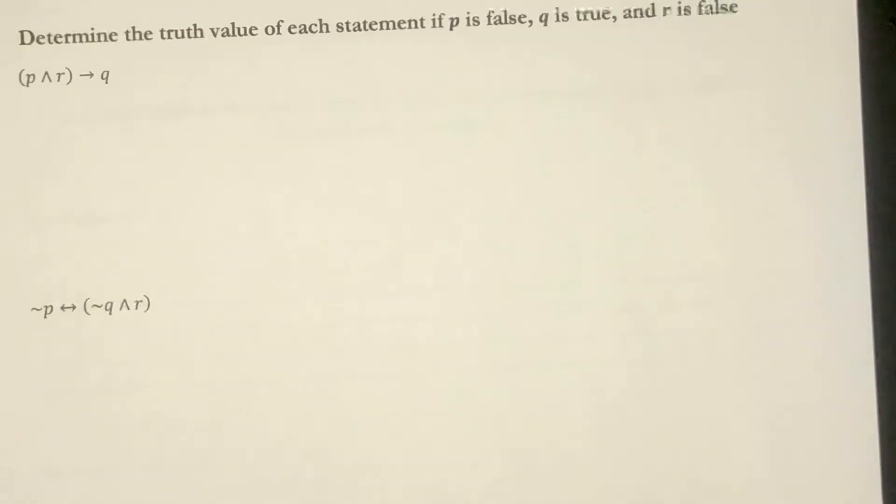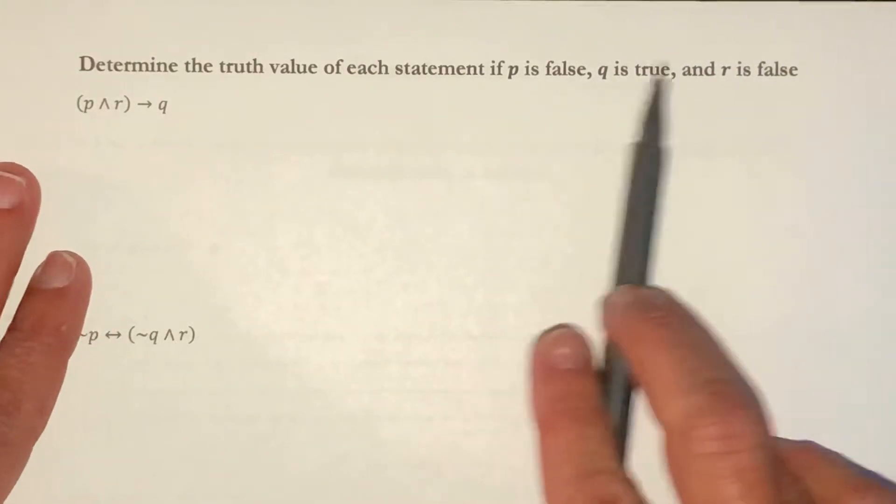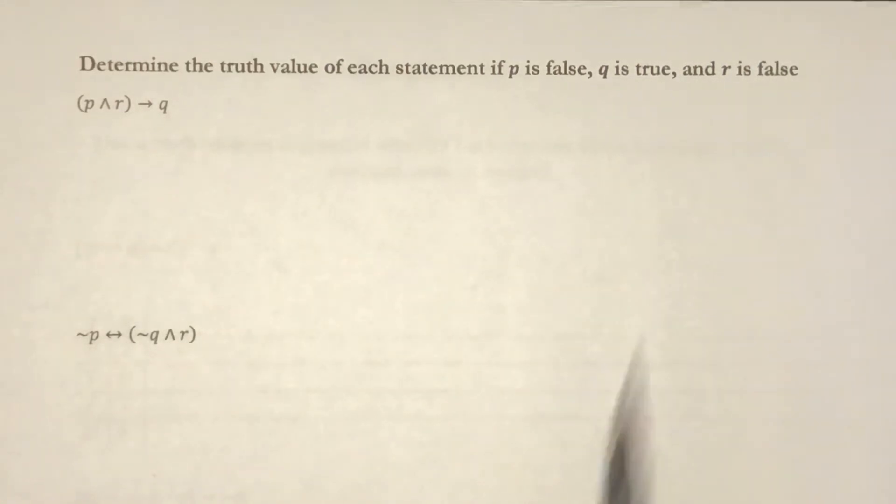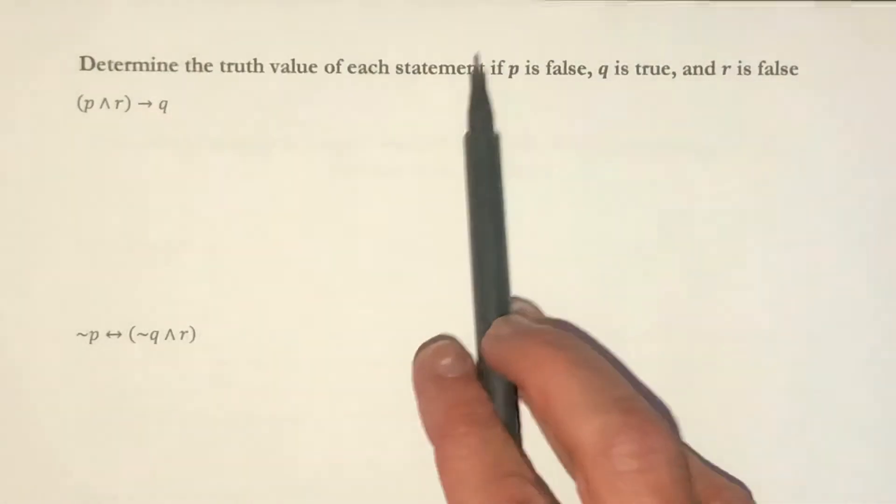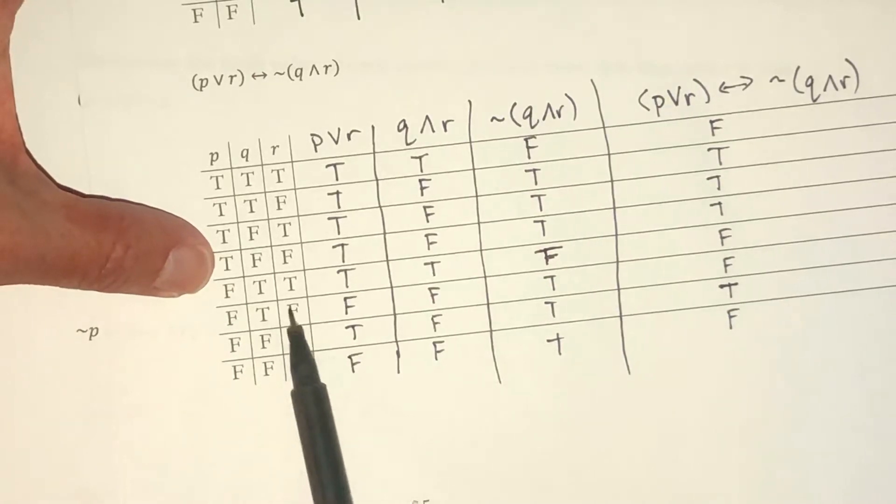Now for our next problems, it's like we're doing a single line from a truth table. We are told our truth values. The P statement is false, the Q statement is true, and the R statement is false. So basically, if I have false, true, false, I'm essentially doing this line, false, true, false.